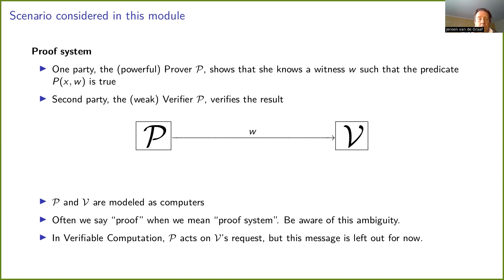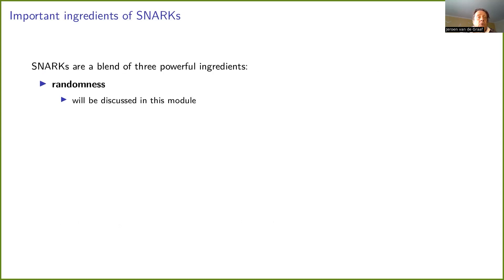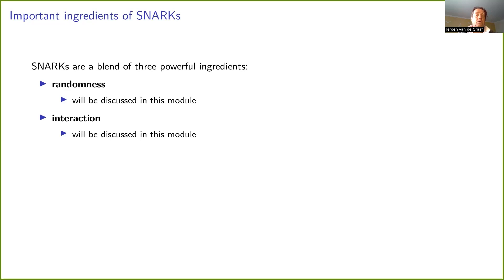Also note that in verifiable computation, it's often true that before the prover sends a message to the verifier, this may be in response to a request by the verifier, but this is not shown here — we are going to leave this out for now. The important ingredients of SNARKs are the following properties: one important ingredient is randomness, which we will discuss in this module, and another is interaction, which will be the second part of this module.